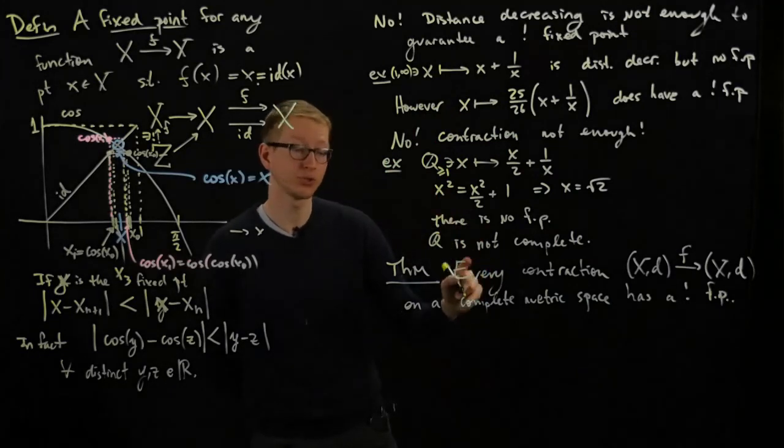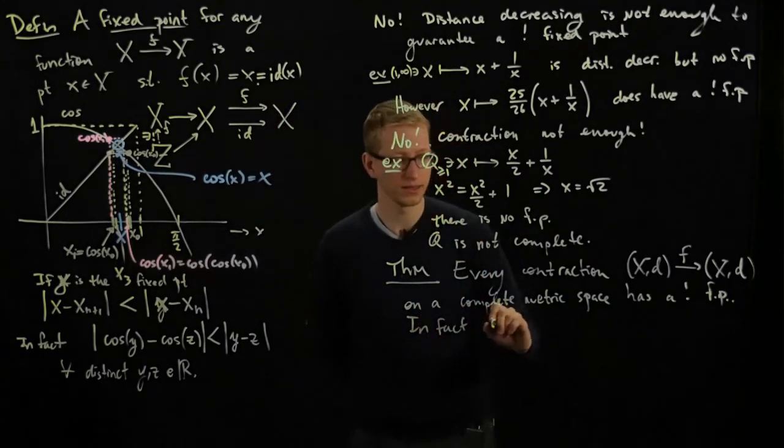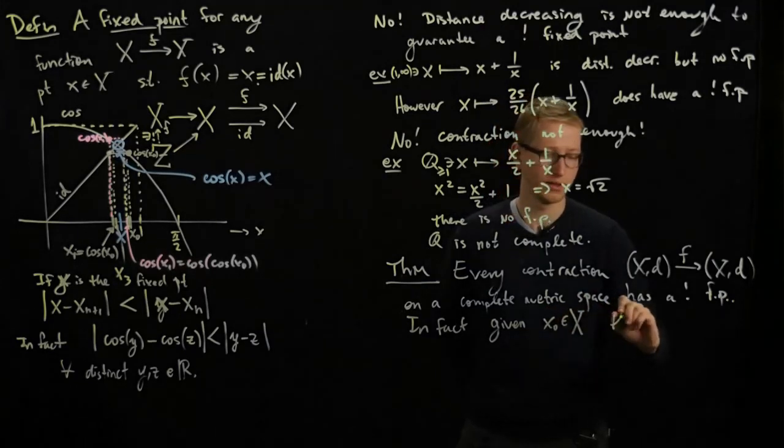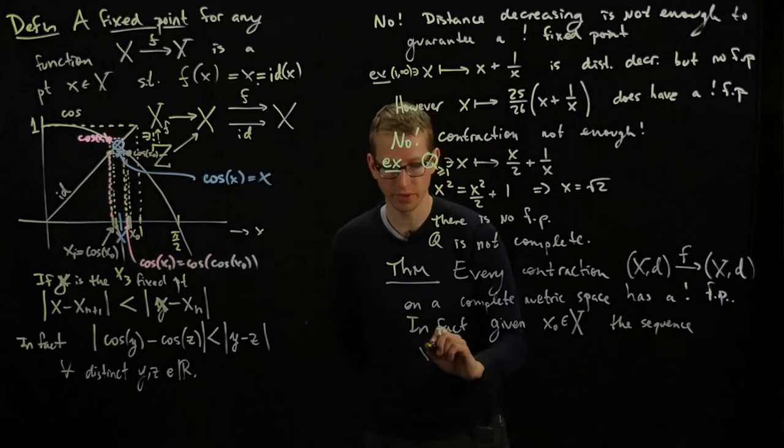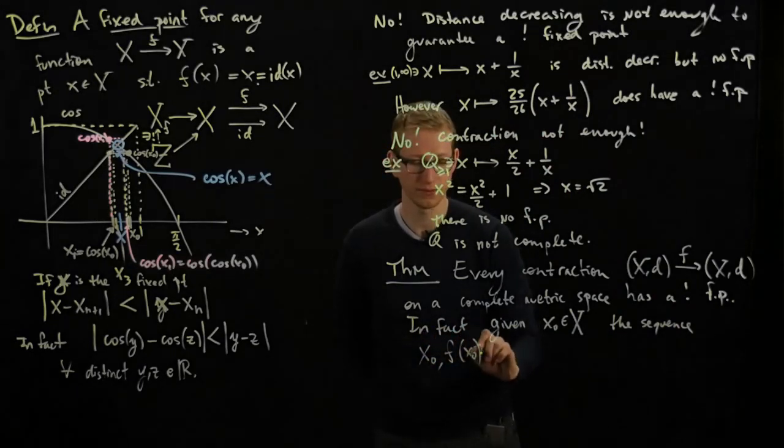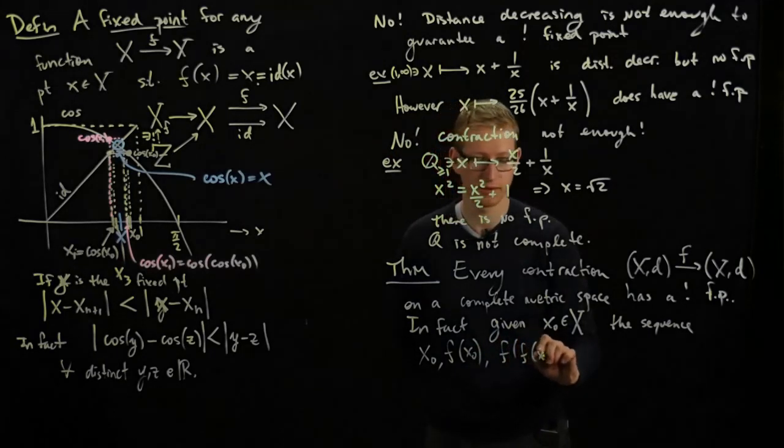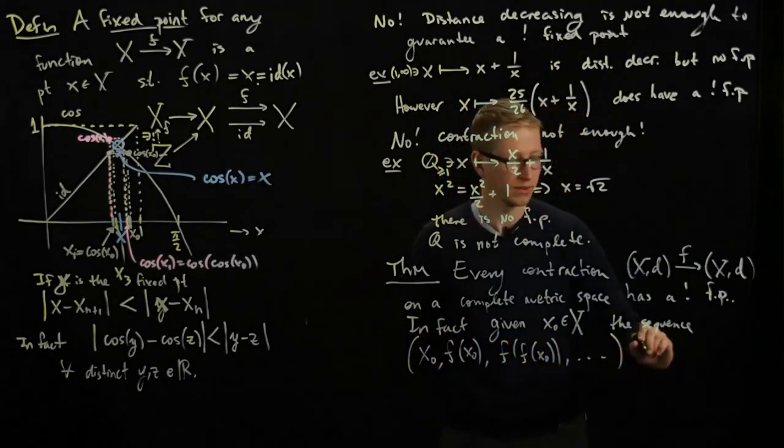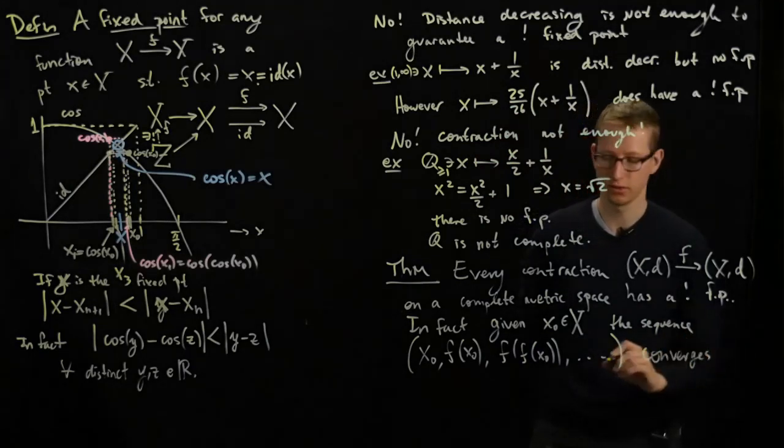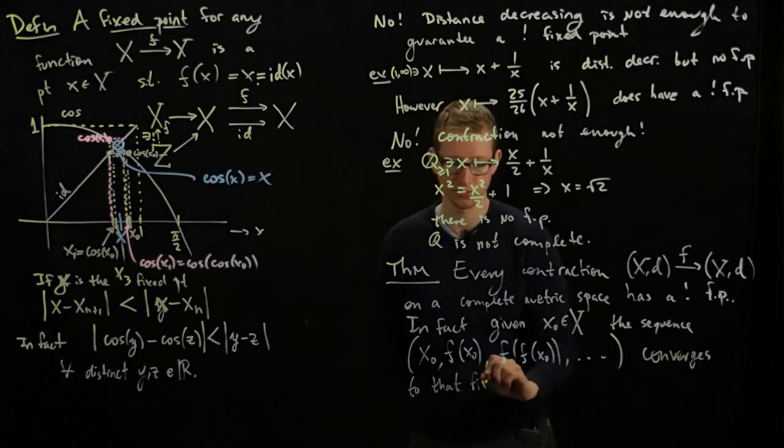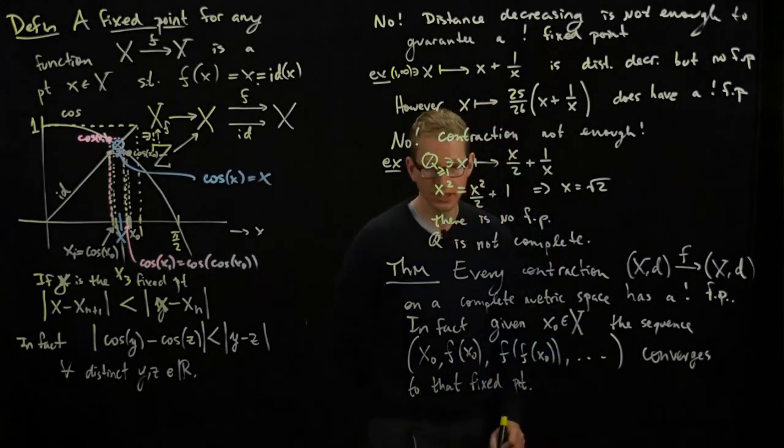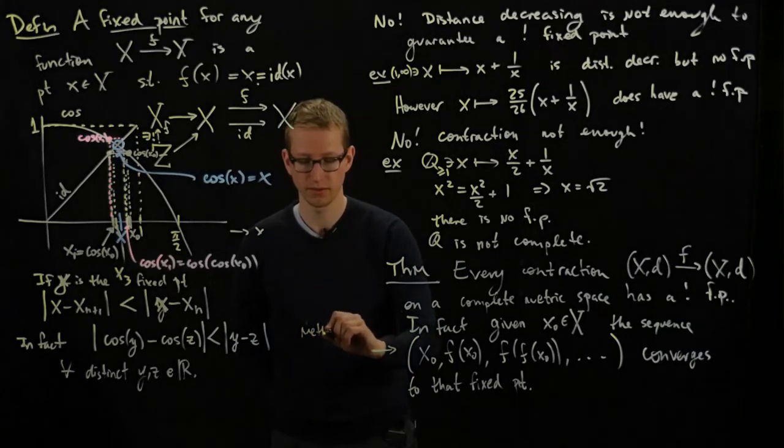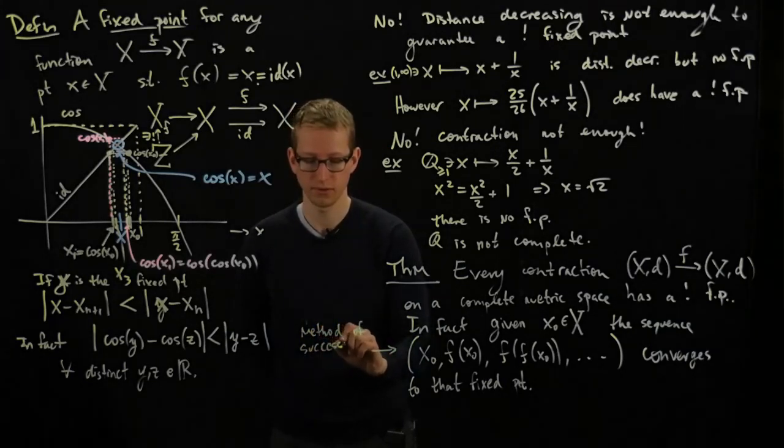And in fact, not only is this true, given any initial condition, any guess, you can think of this as a guess, the sequence given by starting out with that x0, applying f to it, applying f to it again, and just keep on applying f to it, you'll get a sequence of numbers. This sequence converges to that fixed point. And this method of using these conditions is called the method of successive approximations.